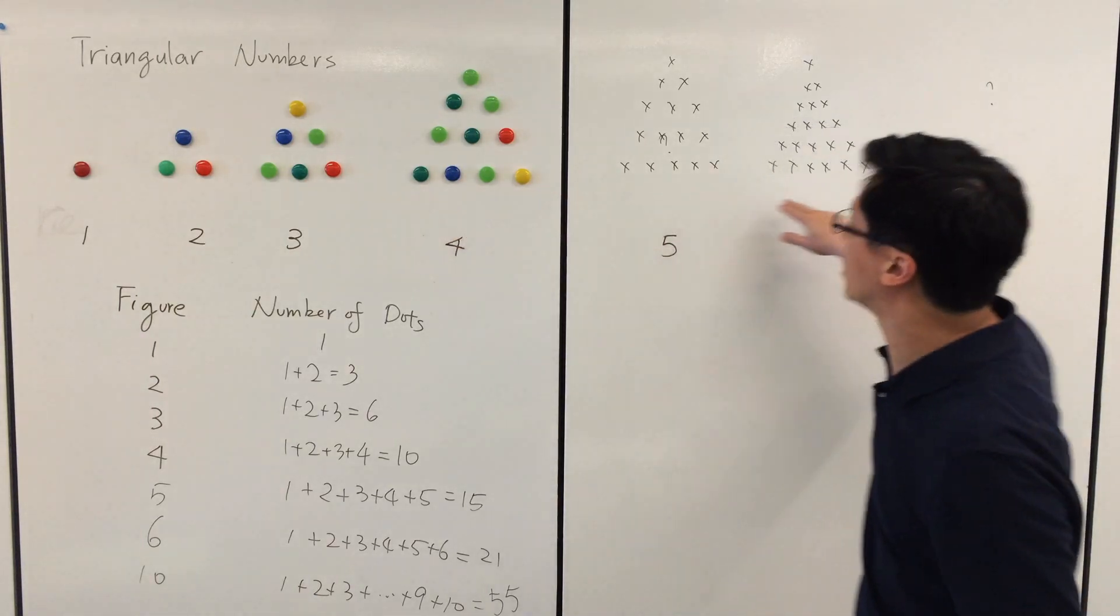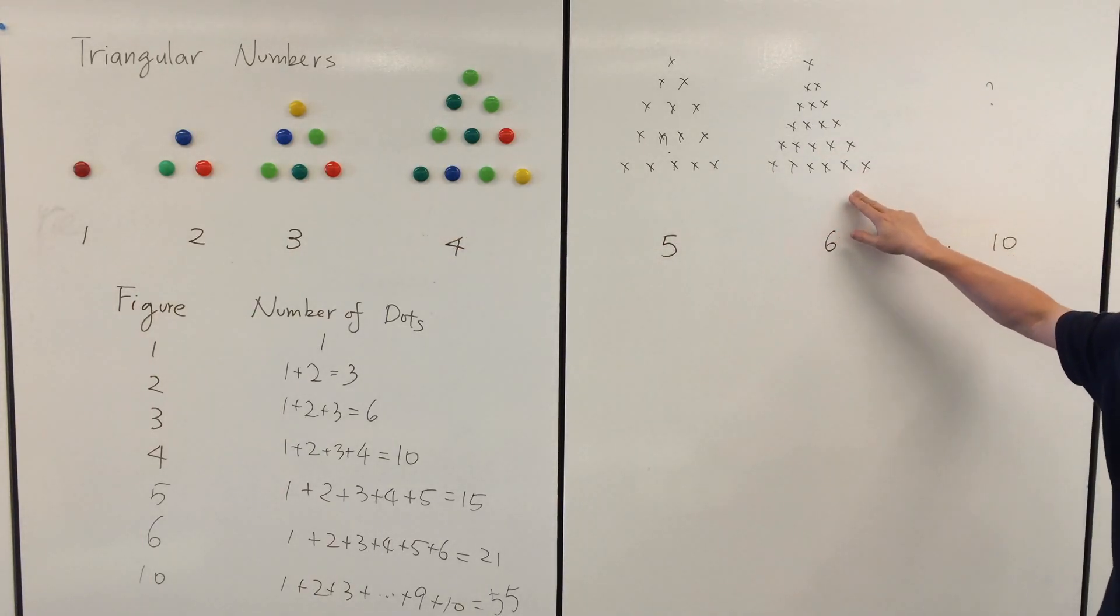These are what we call the triangular numbers. It's another common type of number pattern.